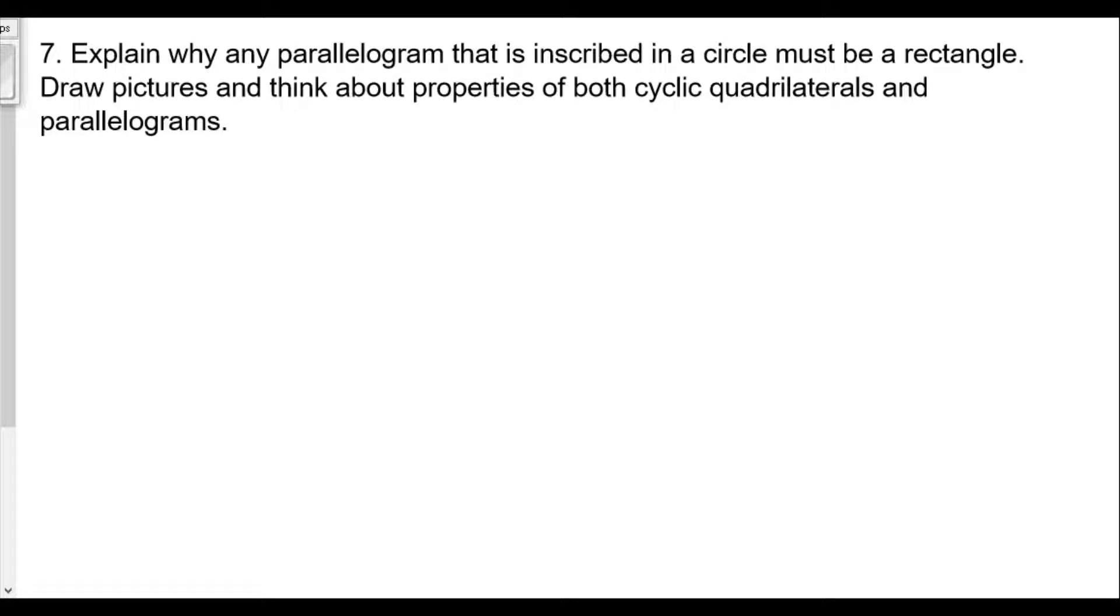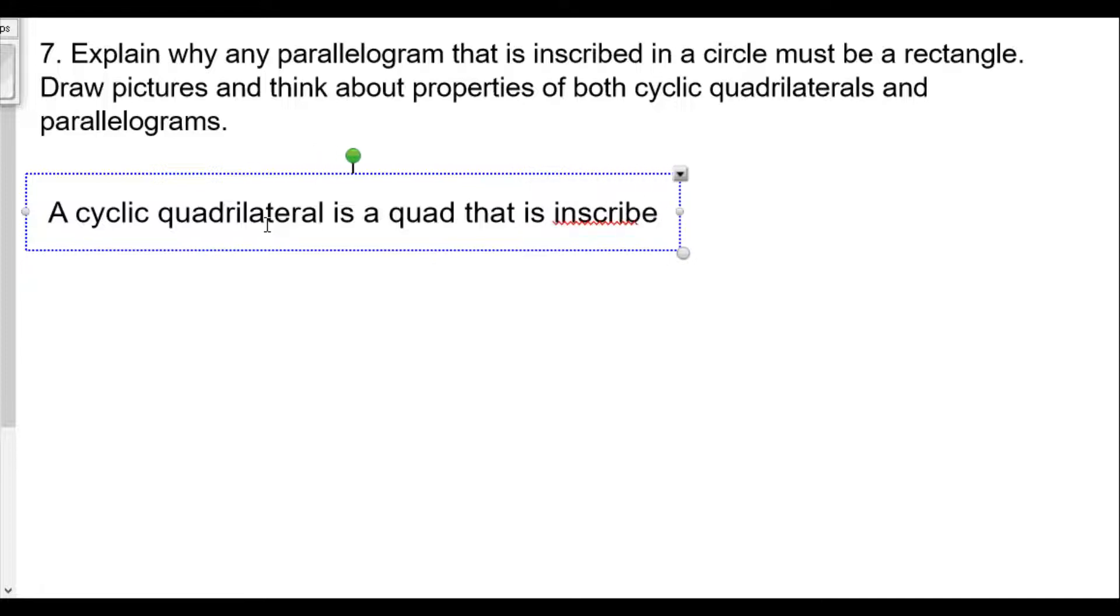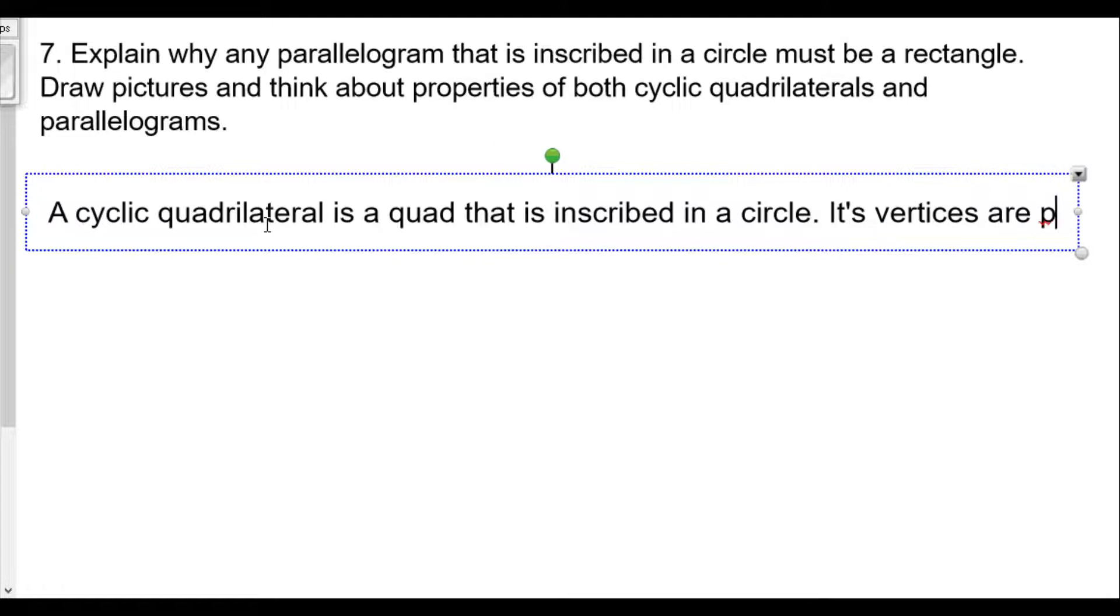Now a cyclic quadrilateral is going to be any quad inscribed in a circle. So a cyclic quadrilateral is a quadrilateral or quad that is inscribed in a circle. Its vertices are points on the circle.